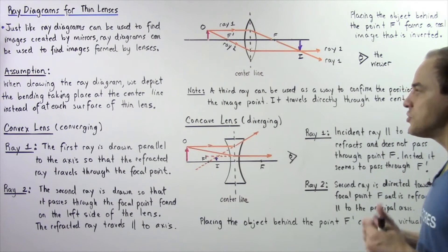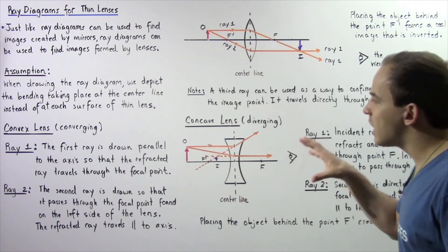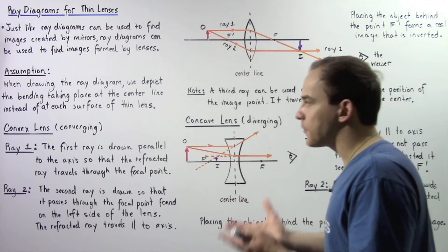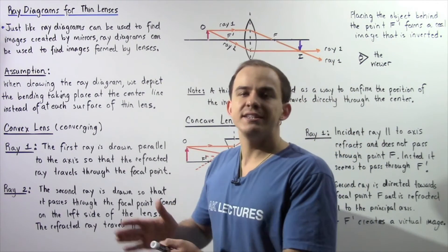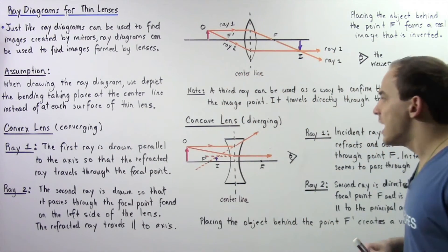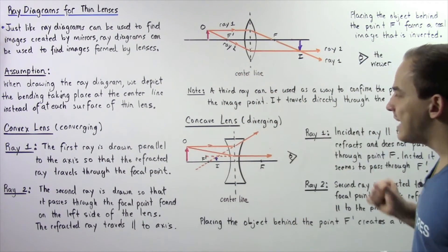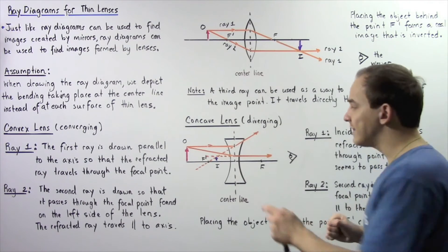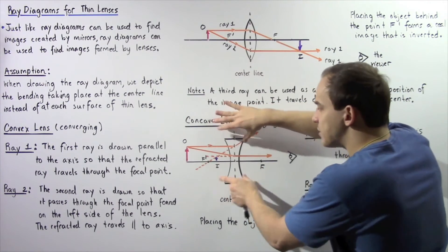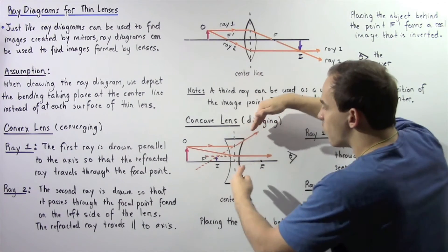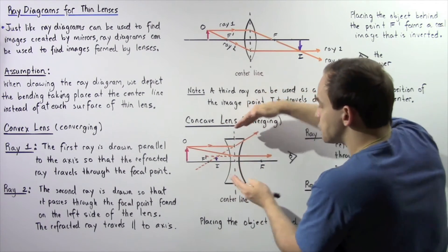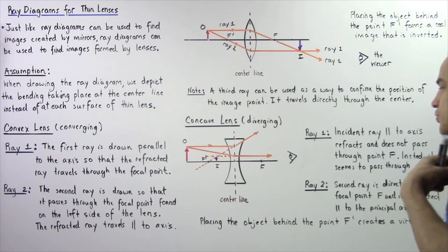Now let's move on to concave lenses, also known as diverging lenses because they diverge light instead of converge. Concave lenses are thinner at the center and thicker at the edges, and that's exactly why light diverges instead of converges.